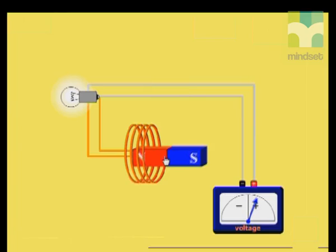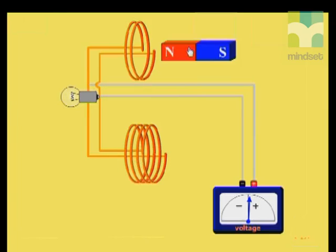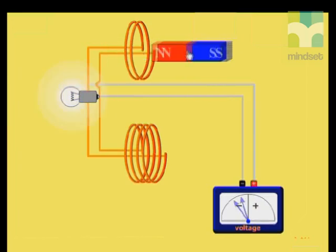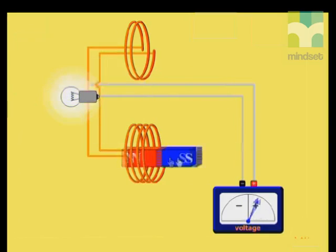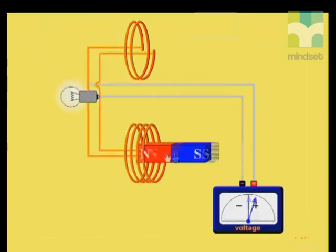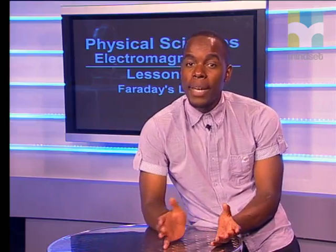We can also use the simulation to see the effect of the number of coils on the induced EMF. A second coil with fewer turns appears. When we move the magnet through this coil, we see that there is not a lot of current induced, since the bulb is not glowing very brightly. When we move the same magnet through the bottom coil at the same speed, the light bulb glows much brighter. The conclusion is that the greater the number of coils on the solenoid, the greater the induced current.